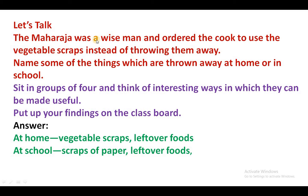Let's talk. The Maharajah was a wise man and ordered the cook to use the vegetable scraps instead of throwing them away. Maharajah ek buddhiman vyakti the. Unhone rasoi ko jo vegetables ke chhilke the unka use karne ke liye kaha, phenkne ki bajaye. Name some of the things which are thrown away at home and in school. Kuch aisi cheezein jo ghar mein aur school mein phenki jaati hain. Sit in groups of four and think of interesting ways in which they can be made useful.